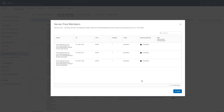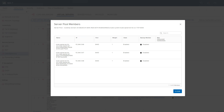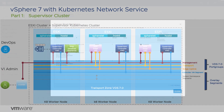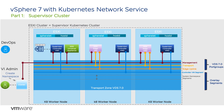In the case of the cluster service, traffic is routed between the cluster interfaces on the Supervisor control plane VMs for access to the Kubernetes API. When the VI admin creates a namespace for the DevOps team, it also gets its own NSX segment with distributed firewall rules that deny traffic to or from the namespace by default. Developers can enable granular access through the use of Kubernetes network policy integration with the vSphere network service.